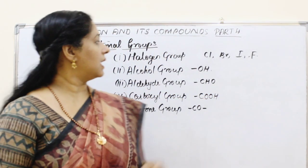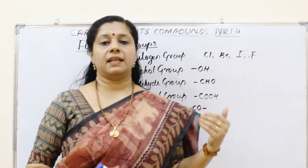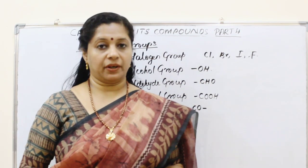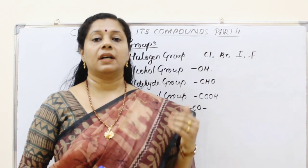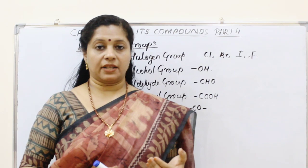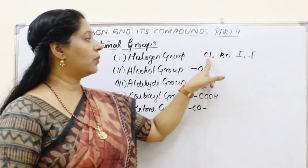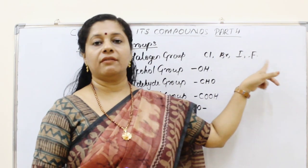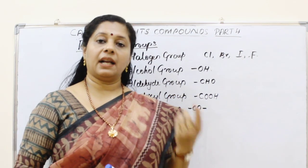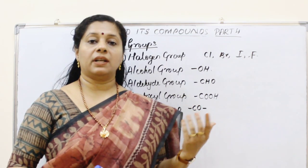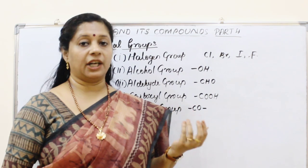The different types of functional groups: the first one is the halogen group. Halogens are elements present in the 17th group of the periodic table. These elements have 7 electrons in their valence shell, so they have to gain 1 more electron. Chlorine, bromine, iodine, fluorine — all these are examples of halogens.